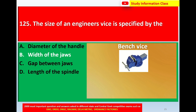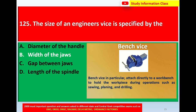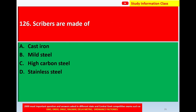This is the diagram of a bench vise. A bench vise is particularly attached directly to a workbench to hold the workpiece during operations such as sawing, planing, and drilling. For question 125, the size of an engineer's vise is specified by the correct answer: Option B, width of the jaws.